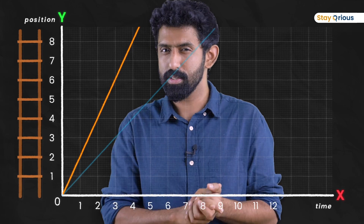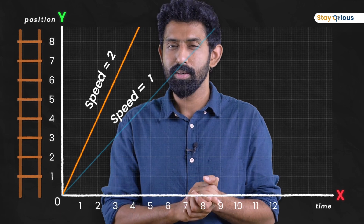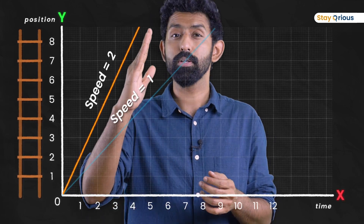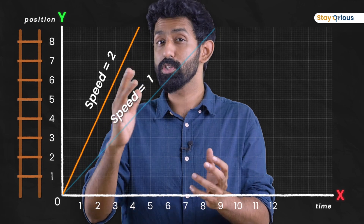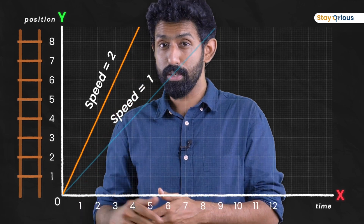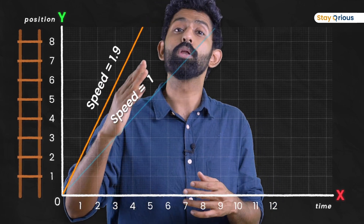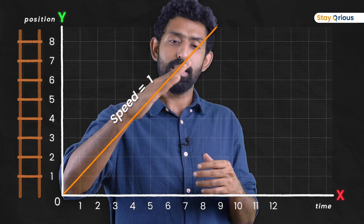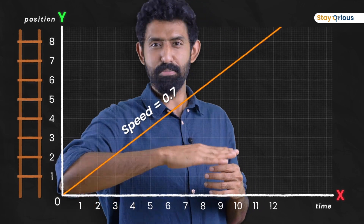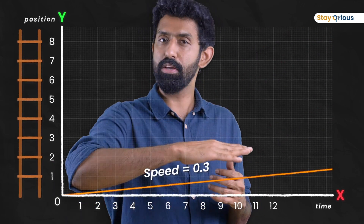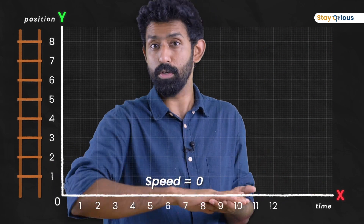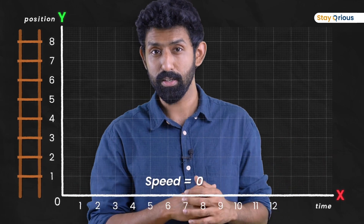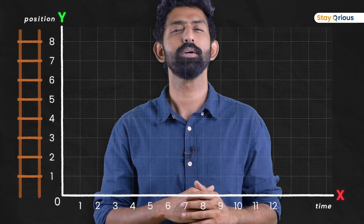So what are you seeing here? The higher the speed, the steeper the position-time graph is going to be. Make the speed lower and lower, it's going to get less and less steep. We should have some word for it. And finally, if the speed becomes zero, it's just going to be a flat line.